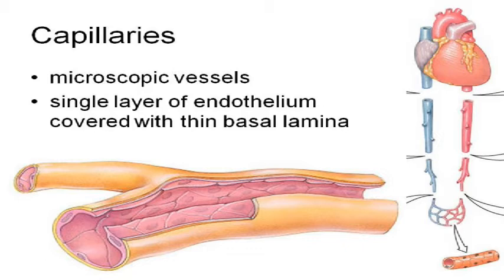A capillary is basically just one cell layer thick. You've got one layer of simple squamous epithelial tissue — we call it the endothelium — but that's all it is, simple squamous epithelial tissue. And then you have this protein glue called the basal lamina that just kind of supports it. It's not another cell layer; it's just some protein.